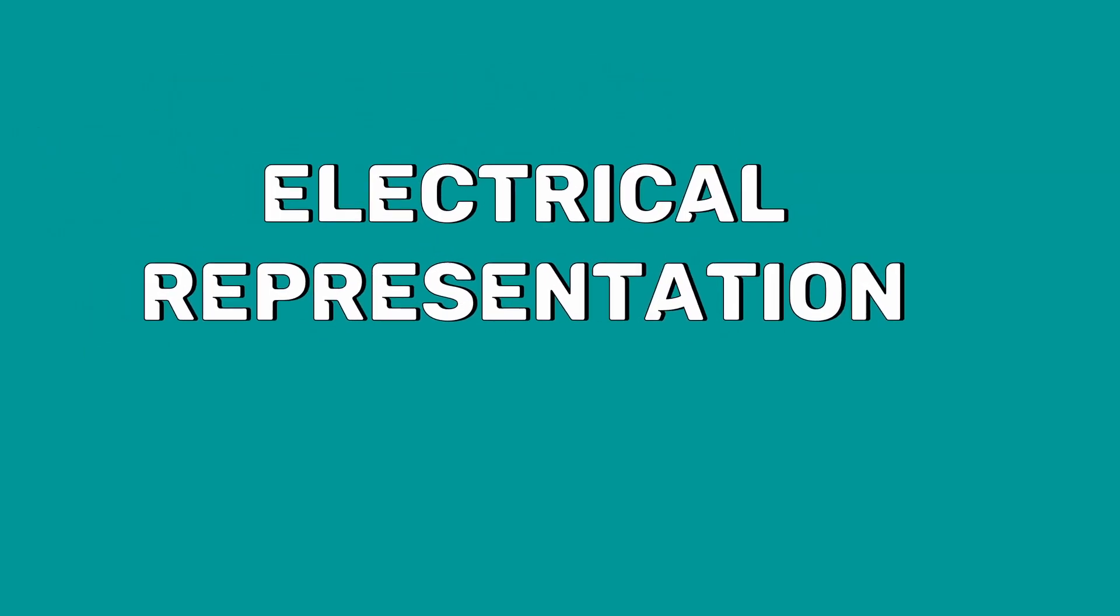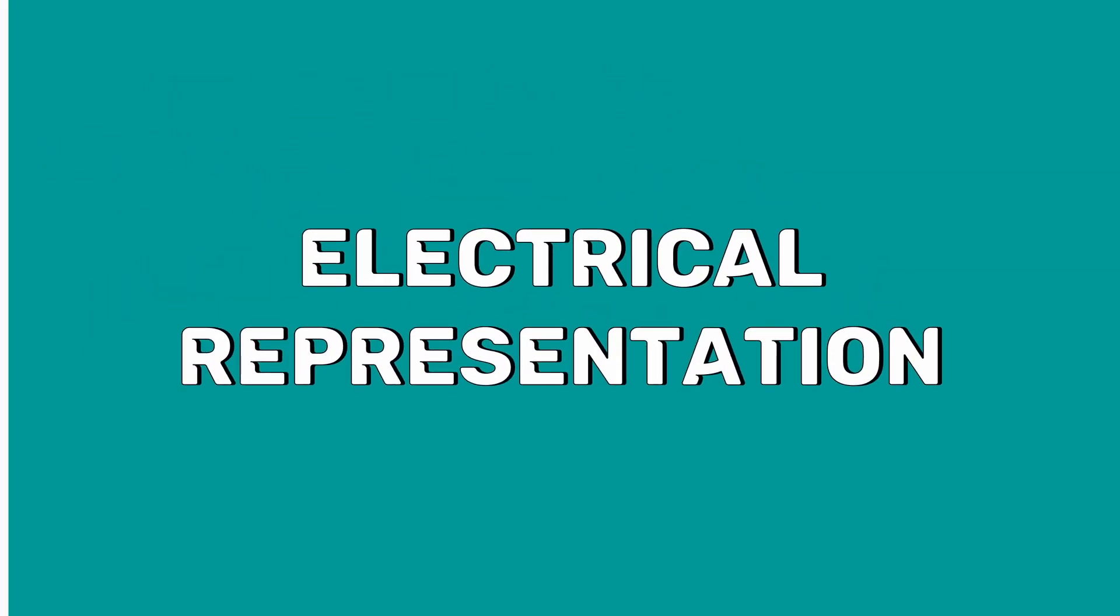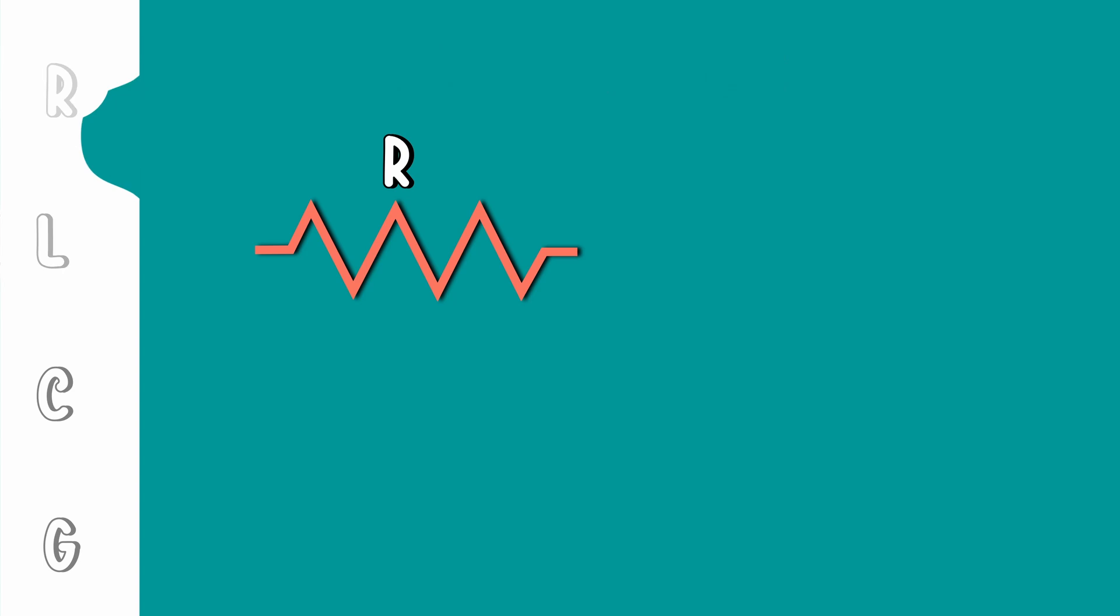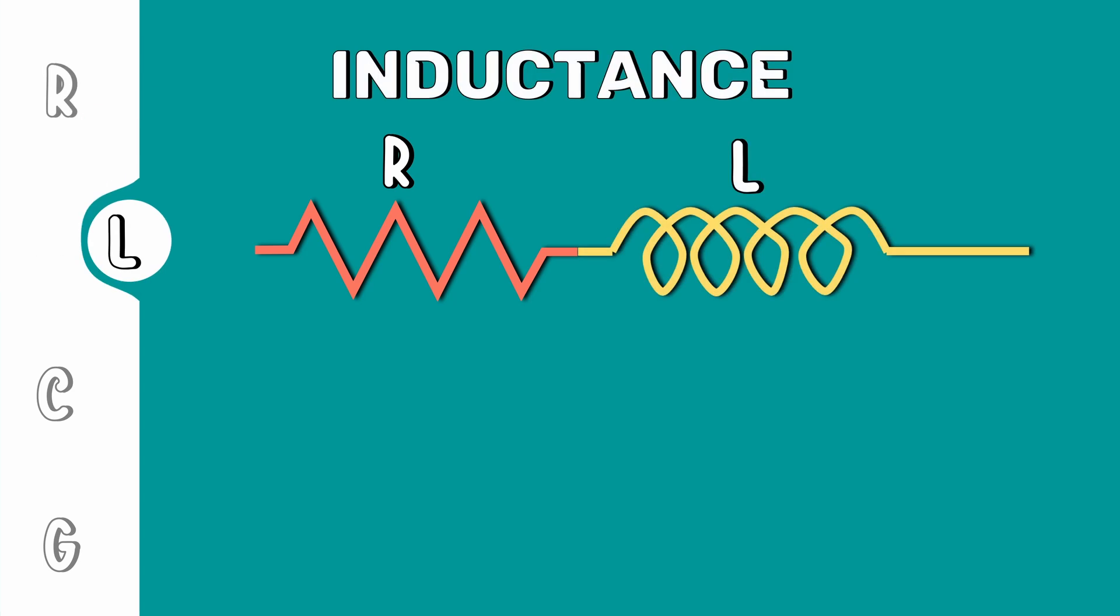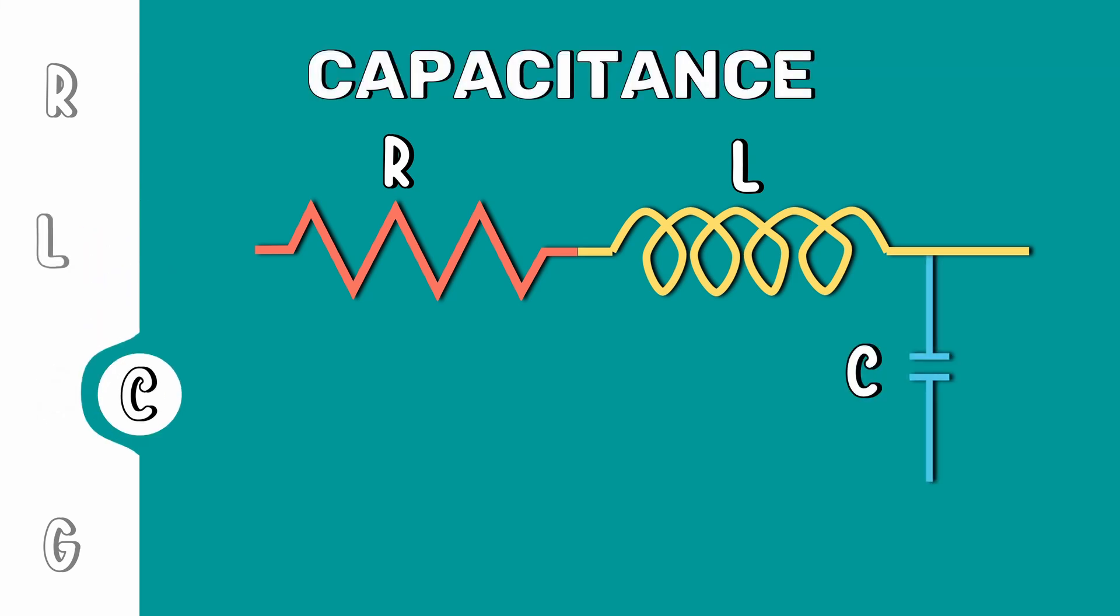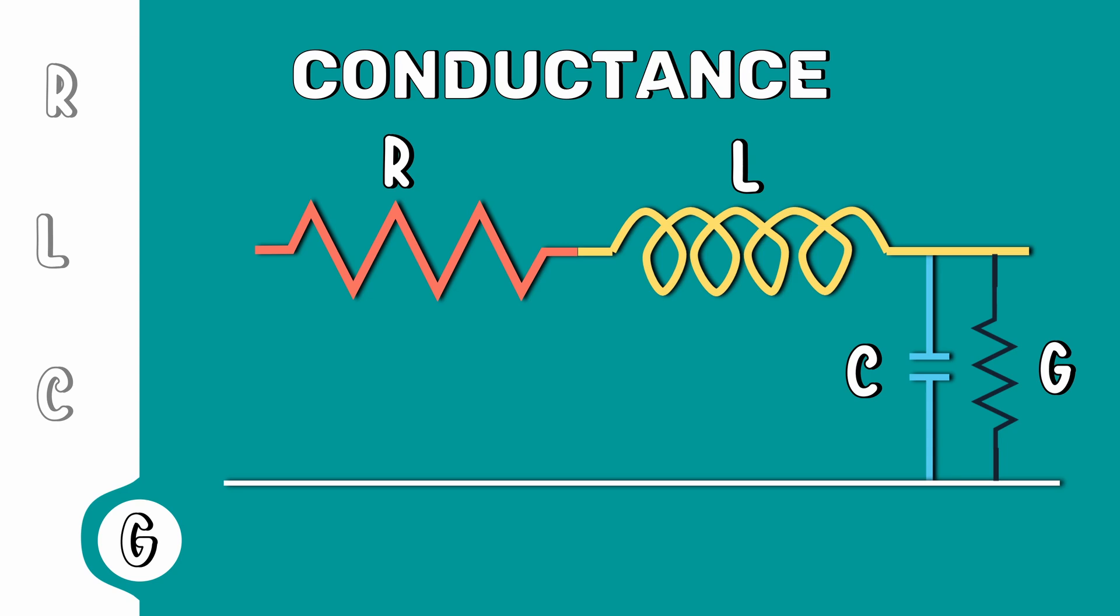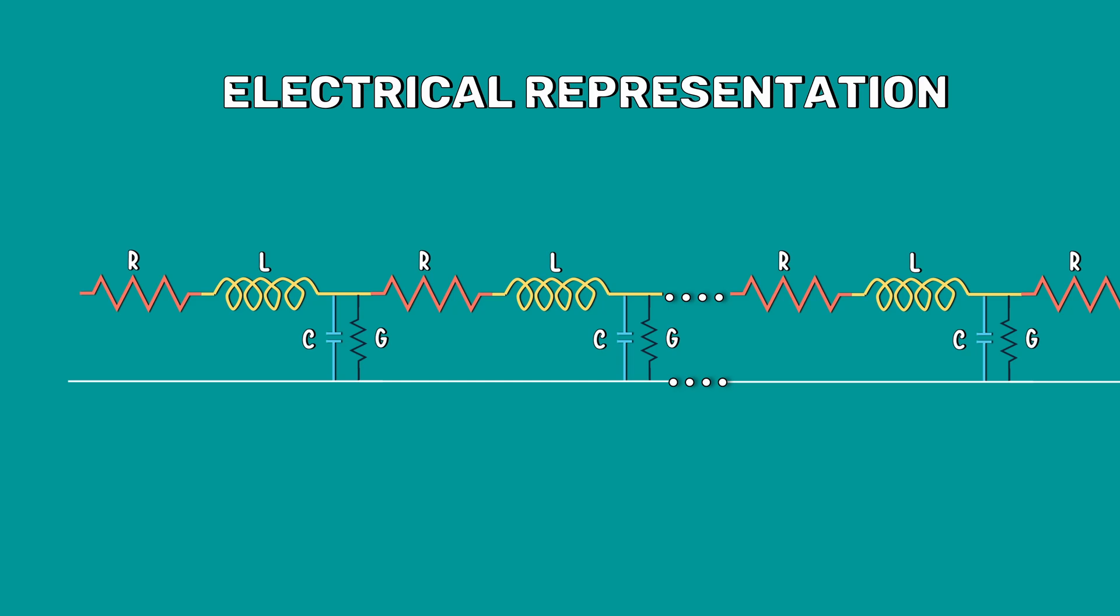Now, let's see the electrical representation of the transmission line. Resistance and inductance are elements in series with the line because they are the properties of the conductor. Capacitance and conductance are shunt elements because they are the properties of dielectric material or insulators between the conductors. These parameters are uniformly distributed along the whole length of the line.